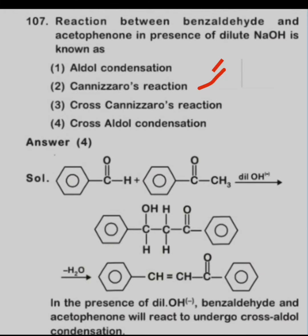Cross Cannizzaro reaction occurs when two different aldehydes combine with each other — aldehydes which do not have alpha hydrogens. The cross Cannizzaro reaction gives formates and alcohols as products.